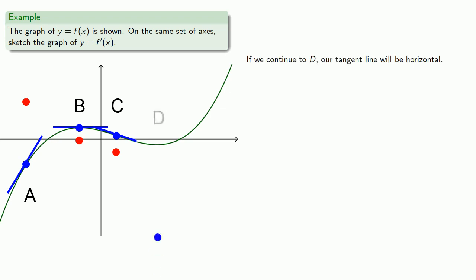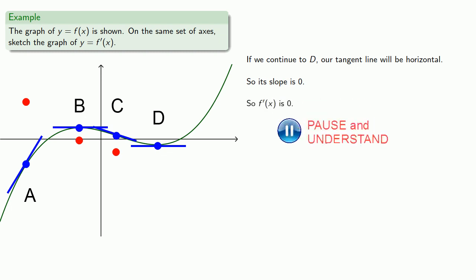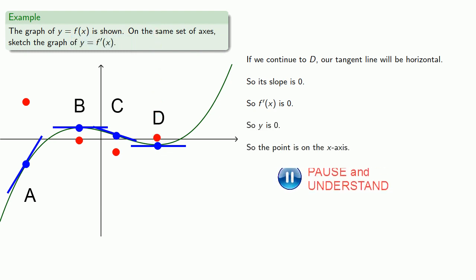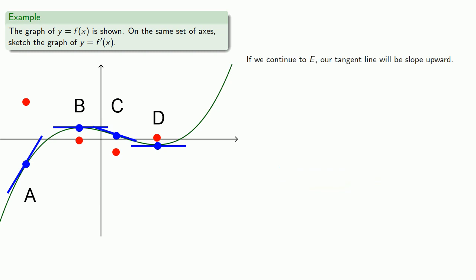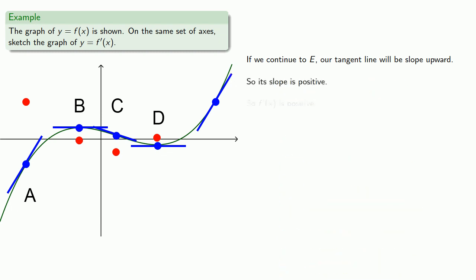And if we continue on to d, our tangent line will be horizontal, so its slope is 0, so f prime of x is 0, so y is 0, and so the point is on the x-axis. And if we continue to e, our tangent line will slope upward, so its slope is positive, and so f prime of x is positive, and so the corresponding point is above the x-axis.